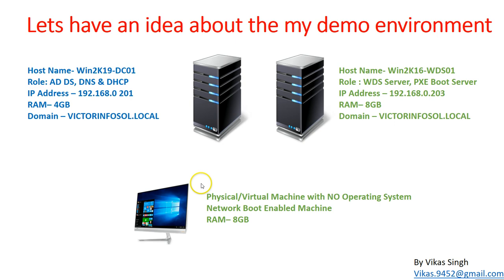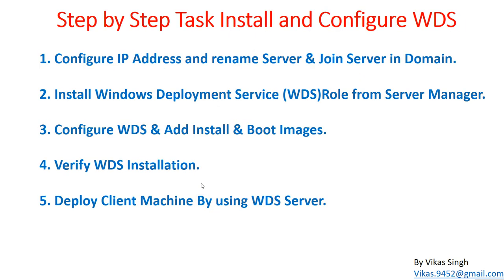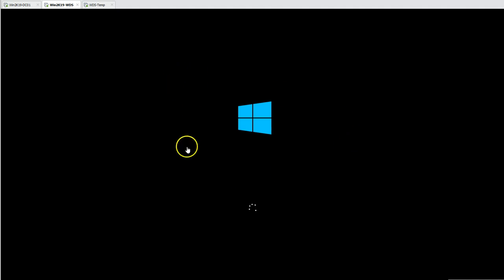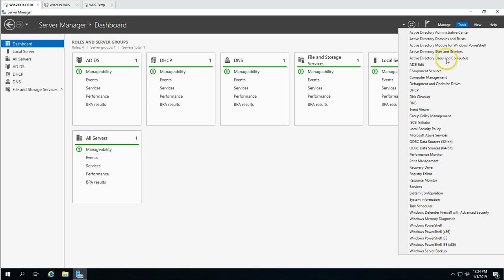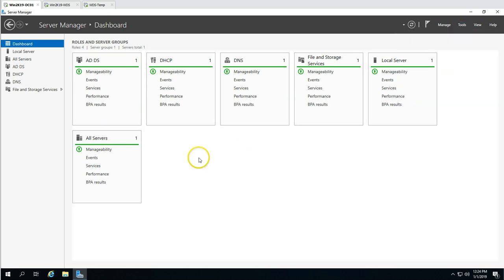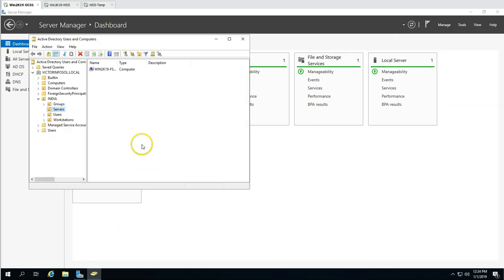We are done with the first task. Now moving to the second step: installing the Windows Deployment Service WDS role from Server Manager. Let's wait for the machine to boot up and then we'll proceed. The machine has now joined my domain.